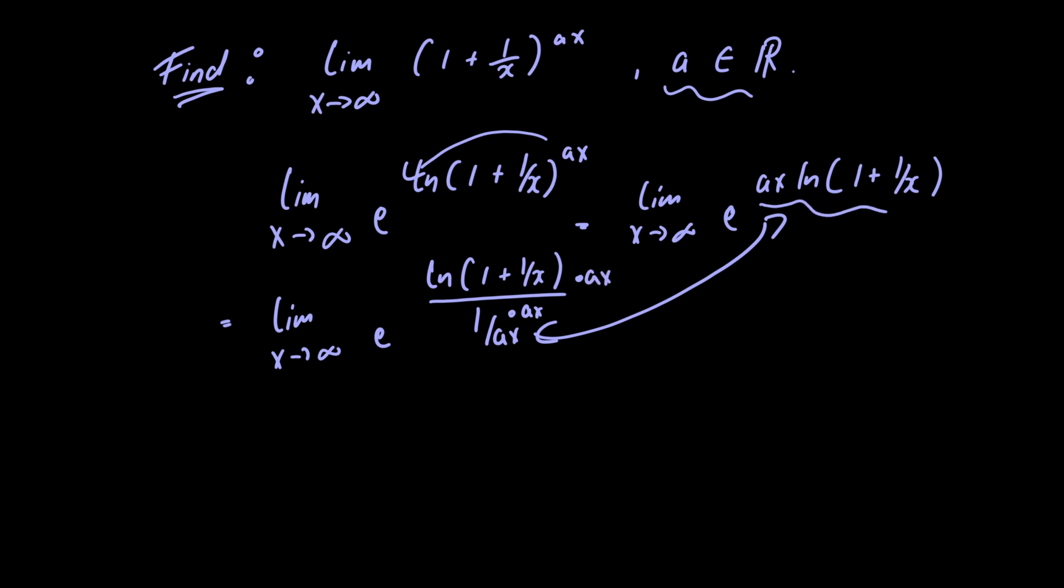Now as the exponential function is a continuous function we can actually move the limit inside of the exponential function. Doing so gives us e raised to the limit as x approaches infinity of the natural logarithm of 1 plus 1 over x divided by 1 over a times x.